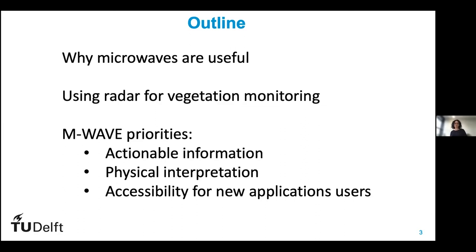A lot of our research is really around the physical interpretation of microwave data, and in our group it's particularly on radar. Where I want to go in the end is hopefully to reach new users. One of the reasons why the uptake of SAR remote sensing for vegetation can be a little slow is that the data is perceived as less accessible. One of the things we wanted to do was try to make it more accessible so that we can really have a dialogue with new users — so they can tell us what they need and we can figure out how to do that with microwaves.